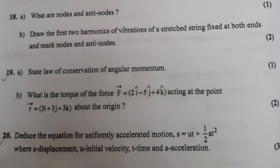Question 20: Deduce the equation for uniformly accelerated motion s = ut + ½at², where s = displacement, u = initial velocity, t = time, and a = acceleration. Answer: Average velocity v = s/t. Also v = (v + u)/2. So s/t = (v + u)/2, giving s = (v + u)/2 × t = (u + at + u)/2 × t = 2ut/2 + ½at². Therefore s = ut + ½at².